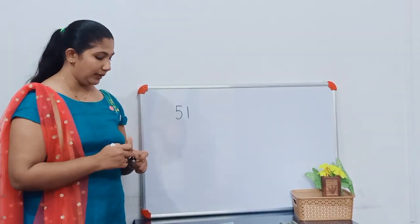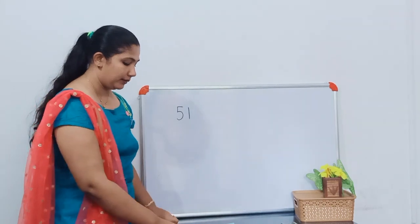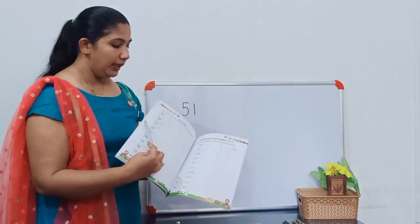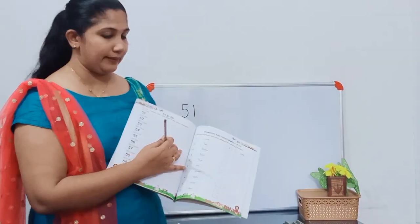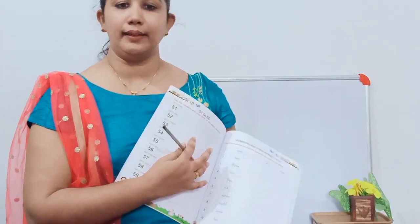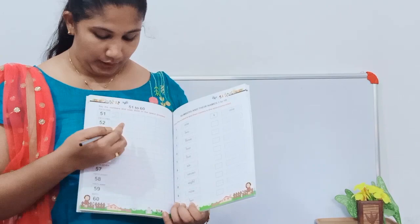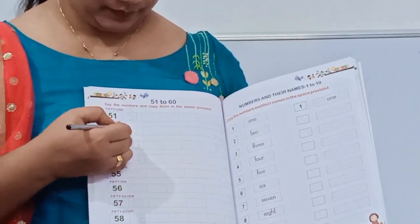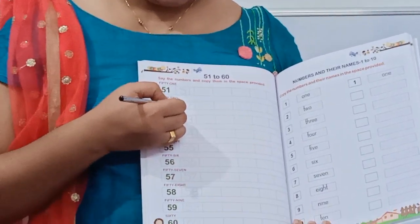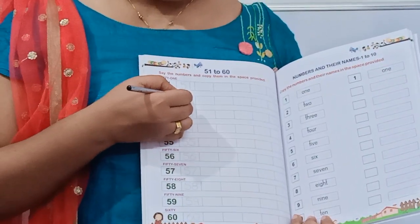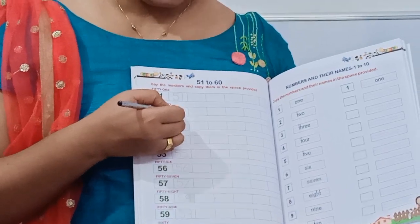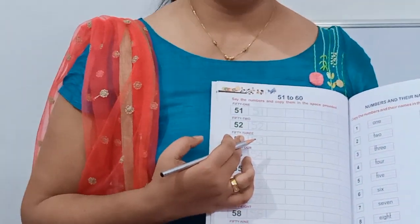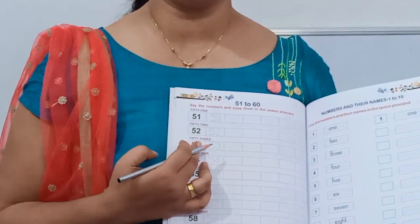Now the dotted lines are for 52. Write number 52.